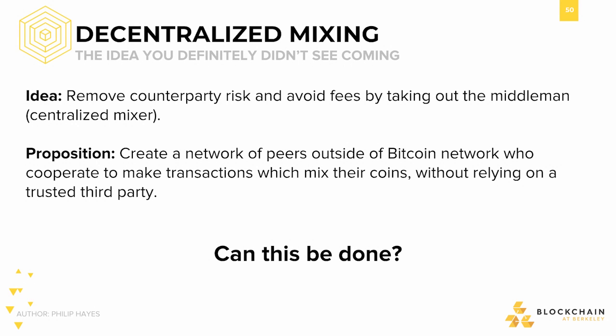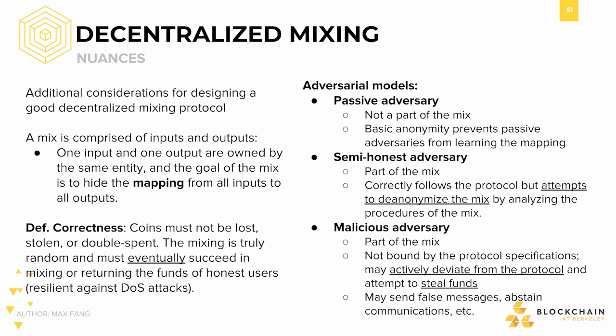Thus far, our proposed solutions have leveraged either a single centralized entity or several at a time. Is there a decentralized solution that will allow us to remove counterparty risk and avoid fees? One idea is to create a network of peers outside the Bitcoin network who can cooperate to make transactions which mix their coins without the need for any trusted third party. Before we dive deeper into the details of mixing protocols, let's take a step back to understand what we're working with and how to recognize a good decentralized mixing protocol.